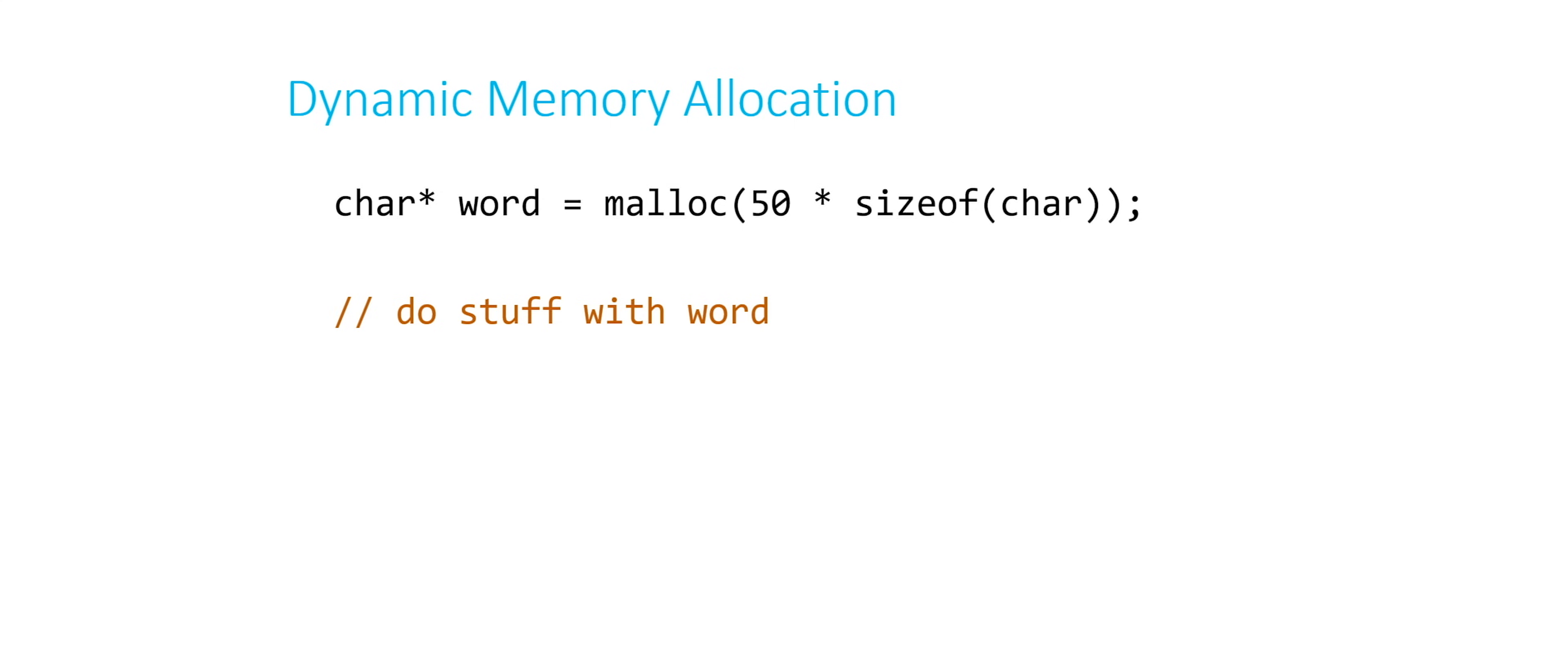We're changing its value. We're assigning new characters. We're printing it out, for example. And then we decide that we're done with it. How do we release this back to the system? We just need to free it. So we free word. Word is the pointer to that block of memory. That's the thing that we want to free.